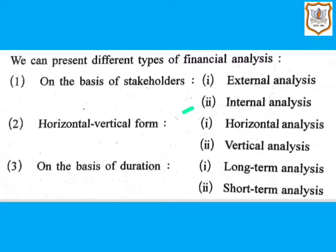Now let us see the next forms: horizontal and vertical analysis. Horizontal analysis is made to review and analyze financial statements for a number of years and is therefore based on financial data taken for those years. It is a time series analysis that shows comparison of financial data for several years against a chosen base year. It is useful for long-term trend analysis and planning. Comparative statements are an example of horizontal analysis, which you will be studying further.